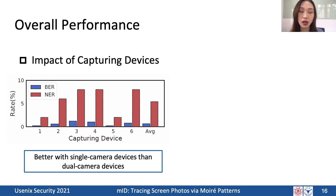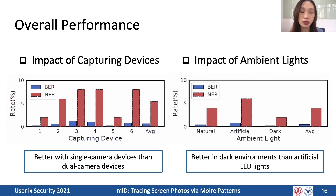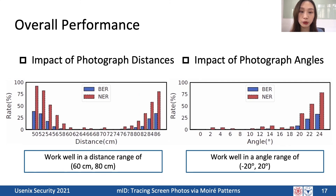For different capturing devices, all work well, but single-camera smartphones show better performance than dual-camera smartphones, possibly because dual-camera phones combine images from both cameras, impacting moiré patterns and decoding accuracy. For different ambient lights, MID works best in dark environments but is compatible with any lighting condition. For shooting distance and angles, MID works well at distances of 60 cm to 80 cm and angles from −20° to +20°, covering the typical attack distances and angles of common adversaries.